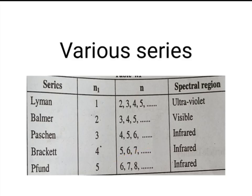The various hydrogen spectral series are: Lyman series where N₁ = 1 and N = 2, 3, 4, 5 — observed in the ultraviolet region; Balmer series where N₁ = 2 and N = 3, 4, 5 — observed in the visible region; Paschen series where N₁ = 3 and N = 4, 5, 6; Brackett series where N₁ = 4 and N = 5, 6, 7 — observed in the IR region; and Pfund series where N₁ = 5 and N = 6, 7, 8 — also observed in the IR region.